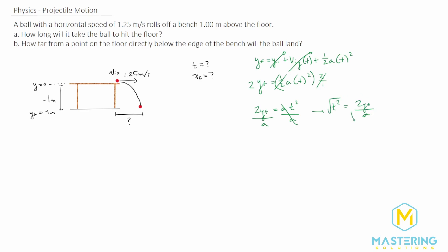We'll take the square root of both sides, of course. So t is finally equal to the square root of 2 times the y final divided by the acceleration.